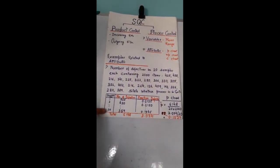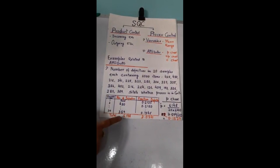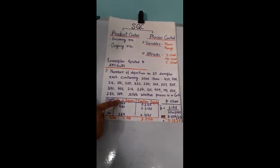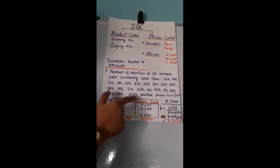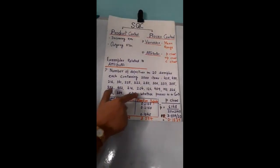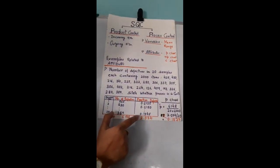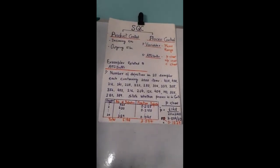Here we have all the samples 1 to 20. The number of defectives as given in the problem are shown here. Total number of defectives if we add them together comes to be 6148. Now what is the fraction defective? In case of p chart, p stands for fraction defective. Fraction defective is nothing but number of defectives divided by the sample size. In our case the sample size is 2000. So fraction defective for the first case will be 425 divided by 2000, which comes to be 0.2125. Similarly for the second case, the fraction defective will be 430 divided by 2000. And this is how we get the fraction defective for all samples. If you add them together, this is summation of p's. In case of p chart, we have to plot the p's.